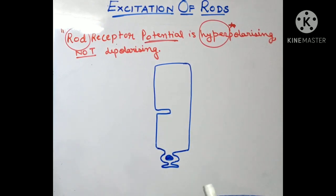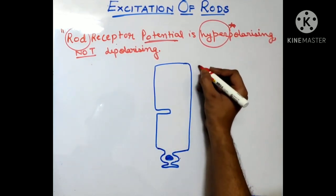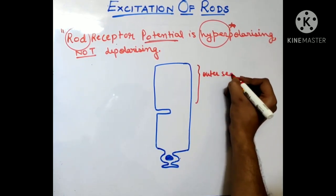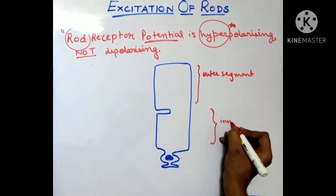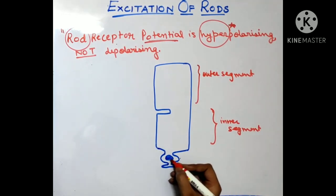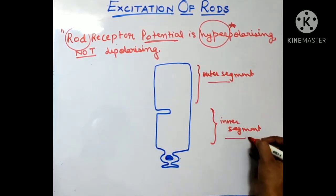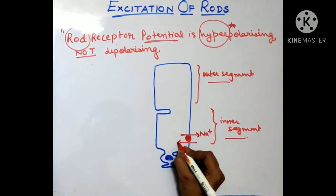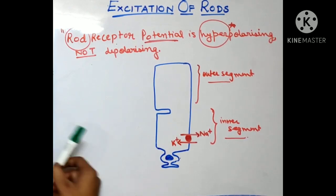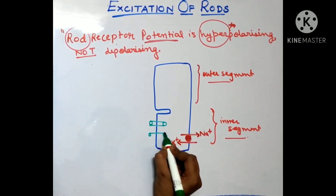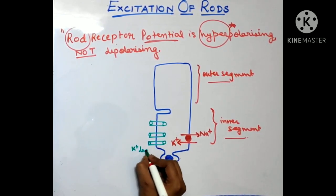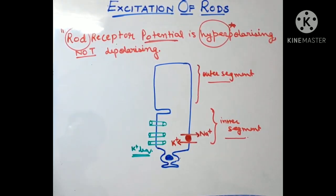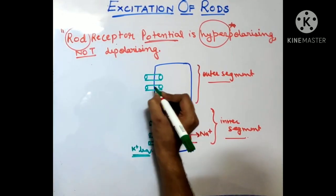Before we understand how this happens, we must know the normal anatomy of one rod cell. This is the nucleus; this particular part is known as the outer segment, and this particular part is known as the inner segment. The one near the nucleus is known as the inner segment and the other one is the outer segment. In the inner segment there is a sodium-potassium ATPase which throws sodium out and takes potassium in. Also in the inner segment there are potassium leaky channels. In the outer segment there are sodium channels.